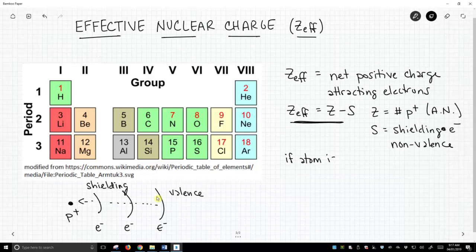...then the number of protons equals the total number of electrons. So our formula becomes, our effective nuclear charge formula, is still Z minus S, but we can replace in total electrons minus shielding electrons.